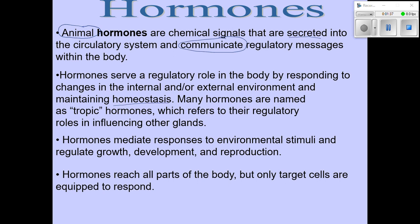Just like with the nervous system, the endocrine system is going to have to be able to detect any changes taking place, whether in the internal or the external environment, and then use these biochemical messengers to enable a response. In order to maintain homeostasis, we will come across a number of different hormones referred to as tropic hormones — for example, gonadotropic hormone — and these are hormones that don't have any specific physiological function other than to trigger another gland to release a hormone as well.